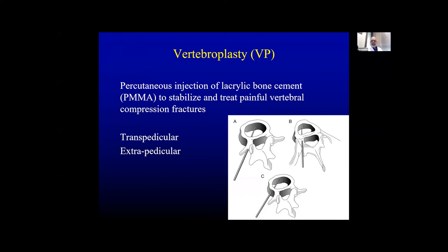Vertebroplasty involves percutaneous injection of acrylic bone cement (PMMA) to stabilize and treat painful vertebral compression fractures. There are two approaches: transpedicular, where the trocar passes through the pedicle of the vertebral body, and extrapedicular, where the trocar is introduced outside the pedicle. In the lumbar region, the transpedicular approach is usually performed. In the thoracic region, the extrapedicular approach is preferred due to the angulation of the pedicle compared to the body.